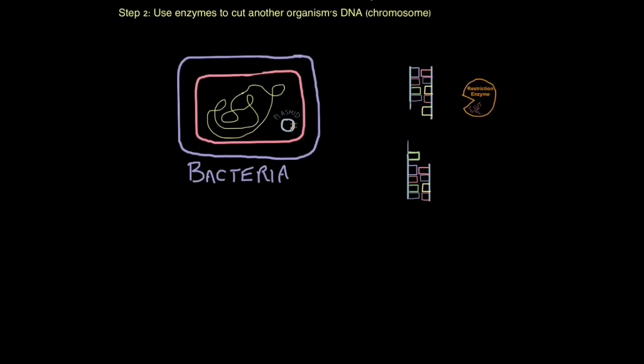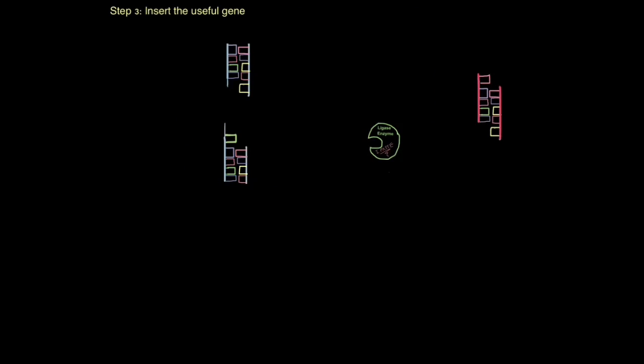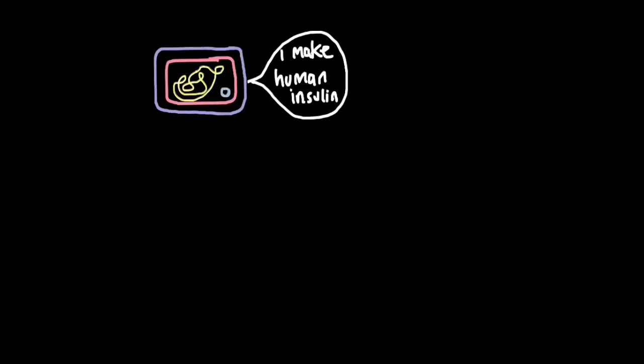So, step two is use enzymes, restriction enzymes again, to cut another organism's DNA or chromosome. Now, all we have to do is insert our gene. So, here's the gene for insulin. I'm going to insert it here so it matches exactly. And then, I use another enzyme called ligase enzymes. And unlike the restriction enzymes which cut, the ligase enzyme pastes. So, the ligase enzyme will come along and basically make sure that the DNA fragment is bonded and securely locked in to that segment of DNA. But all you have to say is, insert the useful gene.